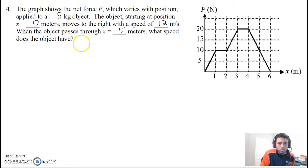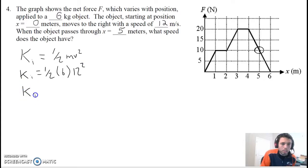I'll do number 4 from the packet. The question asks us when the object passes through x equals 5 meters, what speed does the object have? We already know the object is going some speed, it has a velocity of 12 meters a second. What we're going to do is find its initial kinetic energy, Ki = 1/2 mv^2. Initial kinetic energy will be 1/2 its mass, which was 6, times the velocity squared, which is 12, and we're going to get 432 joules for the initial energy.